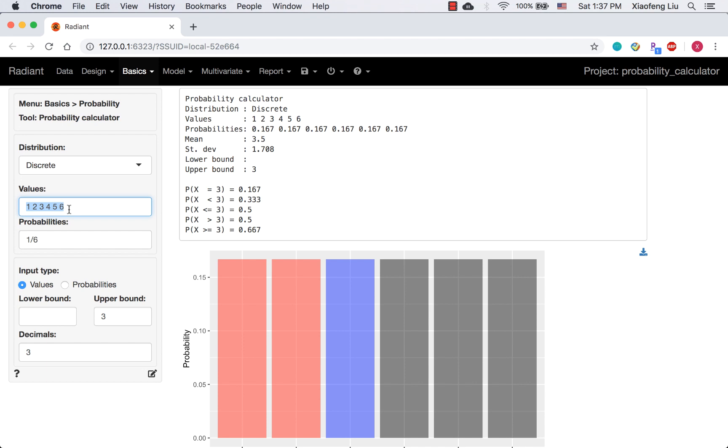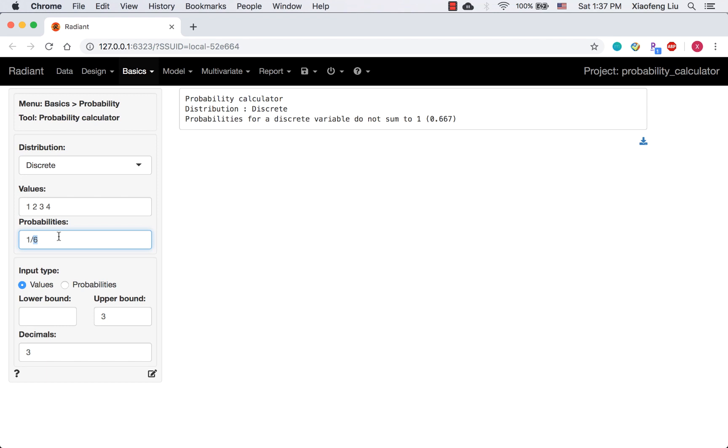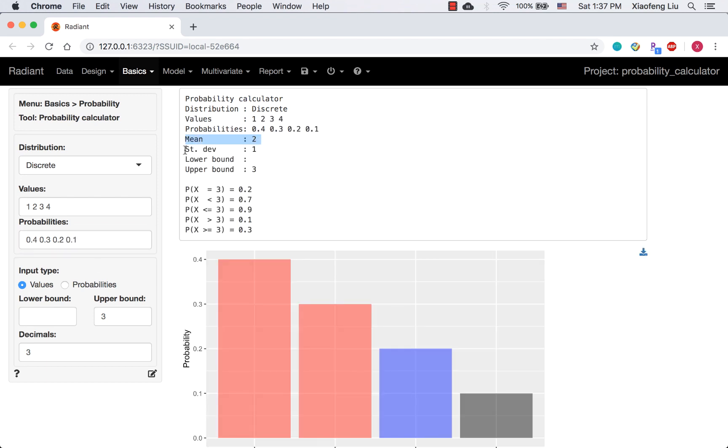We need to enter all possible values and use space to separate them. For the next line, we need to specify the probability for each value. Now we get the mean and standard deviation. Standard deviation is the square root of the variance, so we can square it to get the variance.